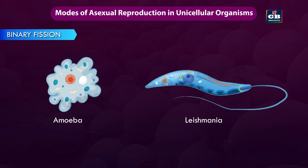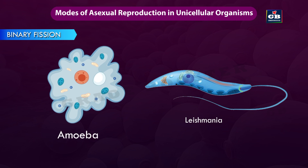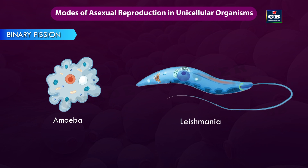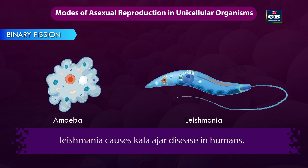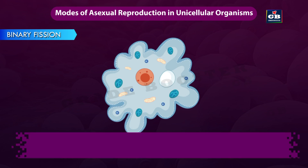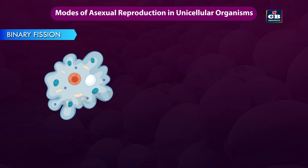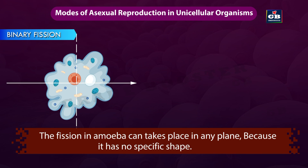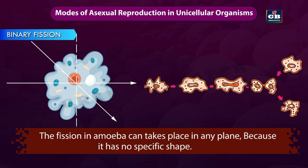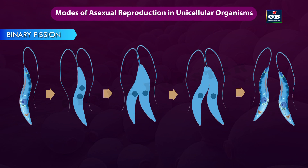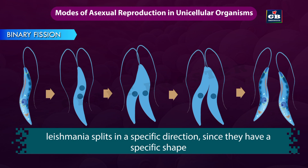Here we have two unicellular organisms: amoeba and leishmania. Leishmania causes Kala-Azar disease in humans. Amoeba has no fixed shape, so fission in amoeba can take place in any plane. Whereas leishmania splits in a specific direction since it has a specific shape.